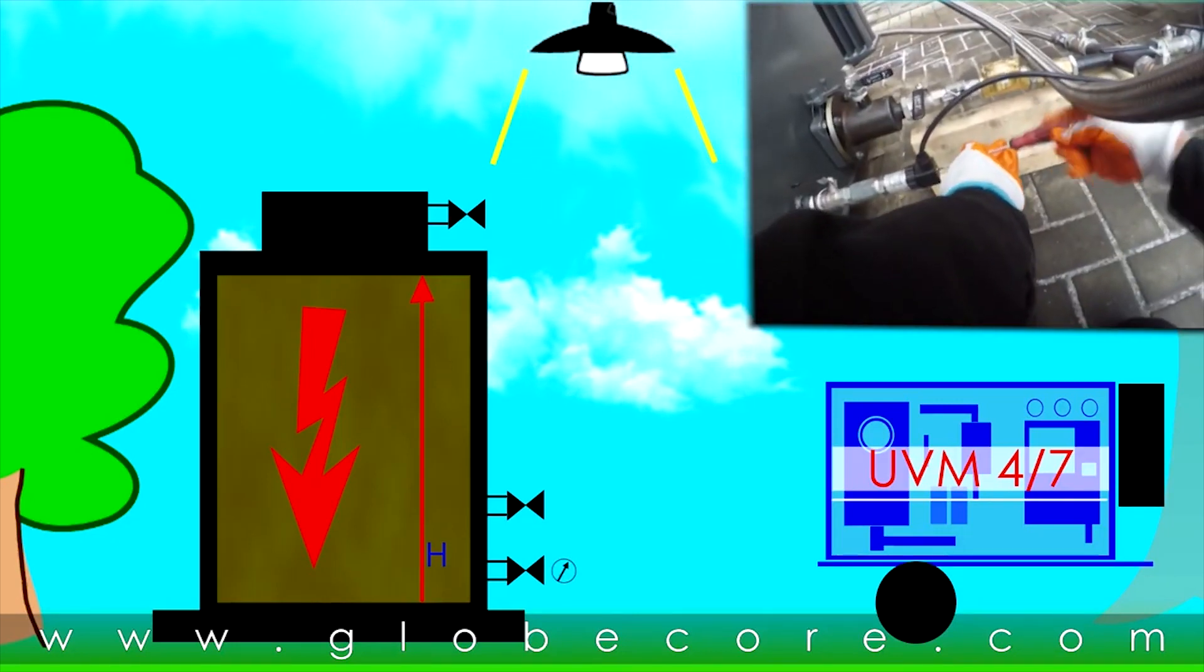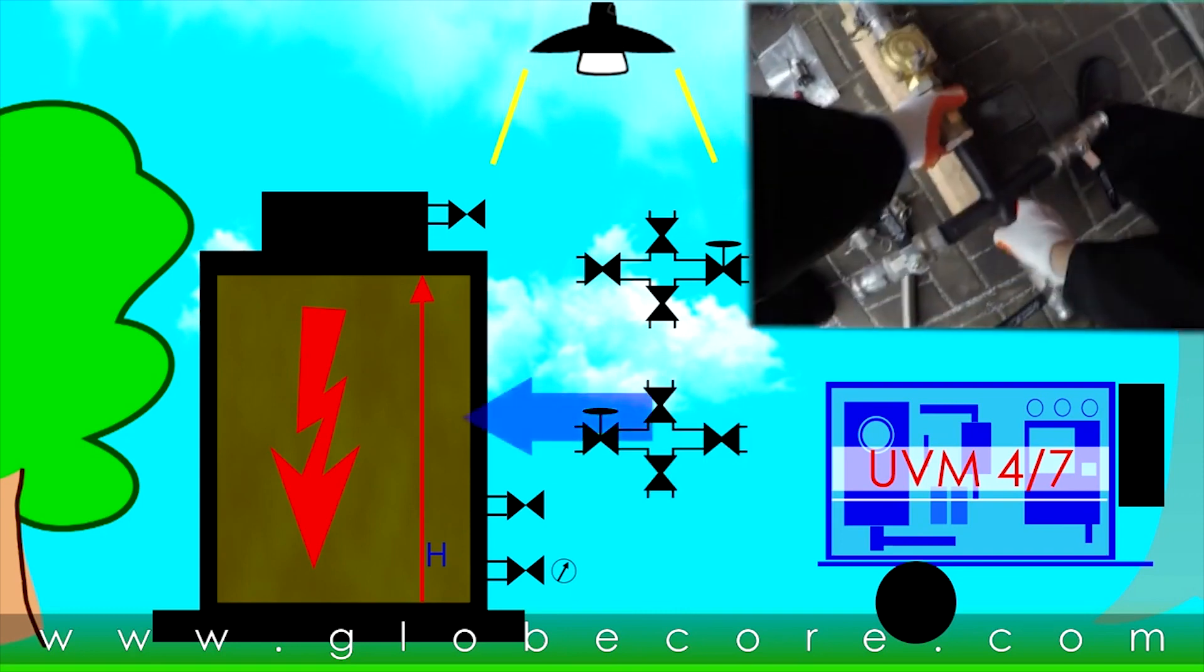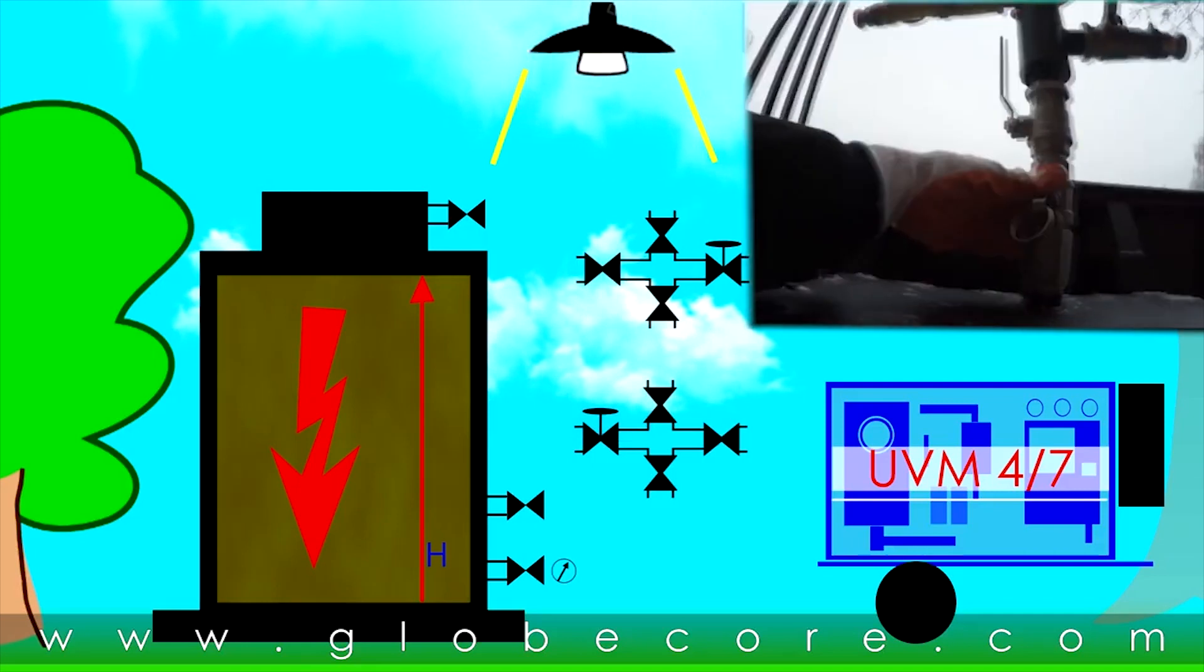This system is equipped with a control cabinet and valves which allow connection of oil lines to the transformer and process the oil so that no air is allowed into the transformer.